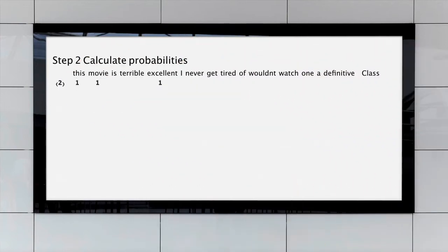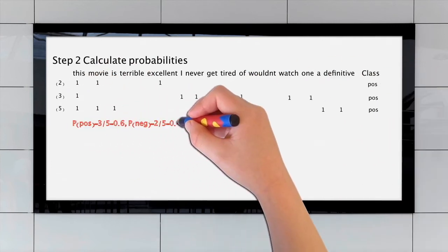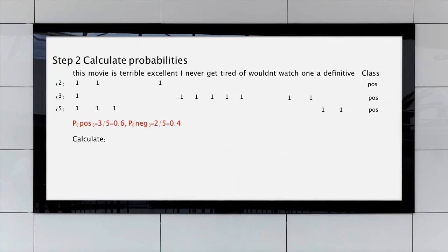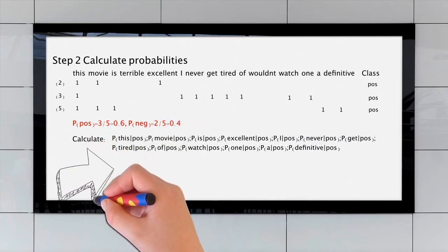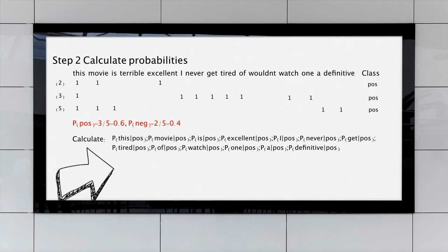Step two, calculate the probability of each class. In our example, we can get the positive class probability as 0.6 and the negative class as 0.4.